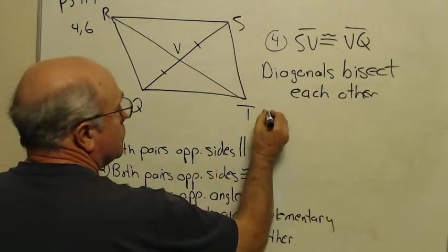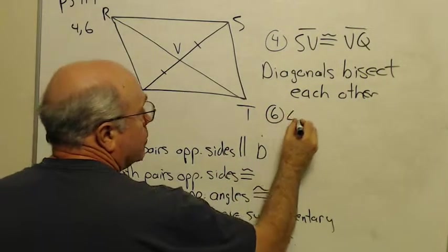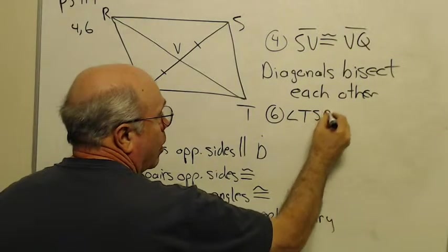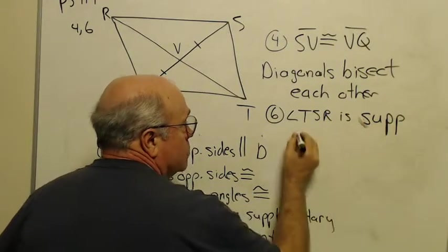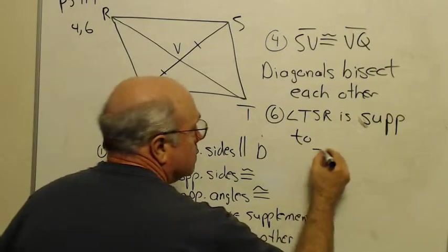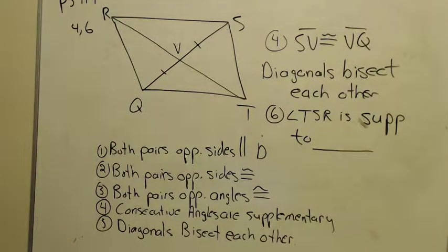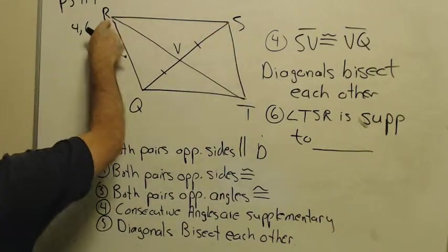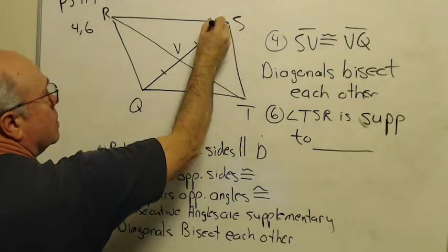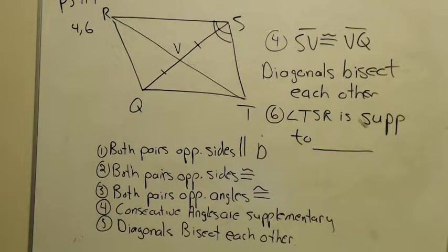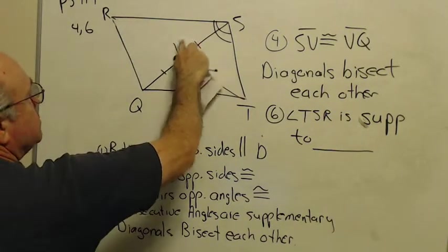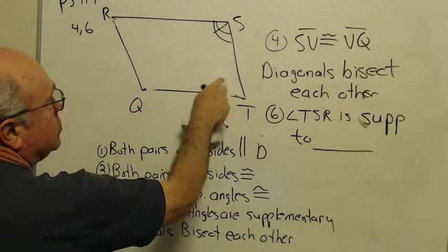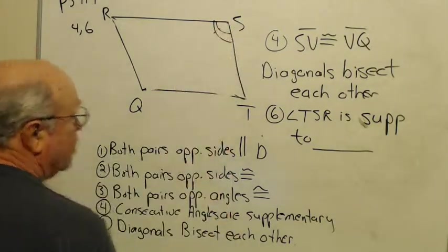Okay, number 6 claims that angle TSR is supplementary, I'm just going to abbreviate SUPP, to, and they want to know to what? Okay, let's go find TSR, TSR. That's this whole angle up here. And sometimes when you're trying to do problems like this, the diagonals get in the way of what you're trying to see. So I'm just going to go ahead, because this is my last problem for this particular picture, and erase the diagonals. And that's why I always like to have two pictures of parallelograms, one with diagonals and one without.